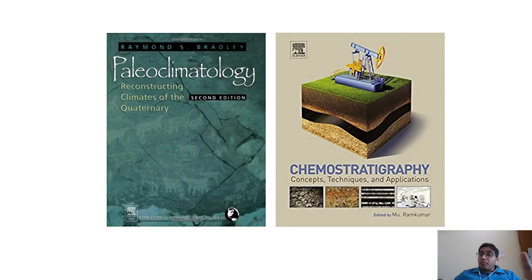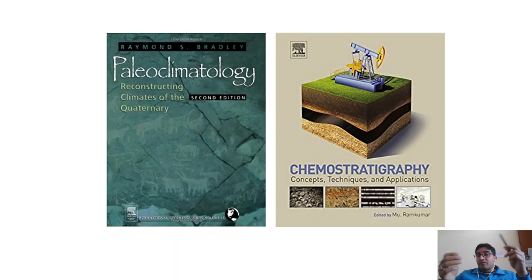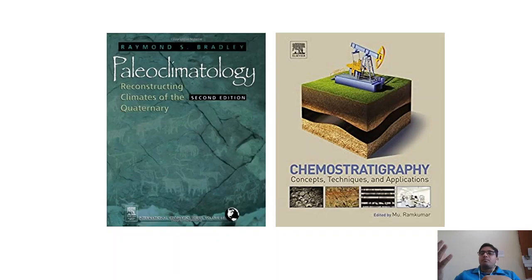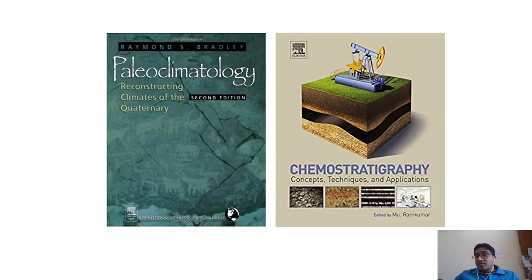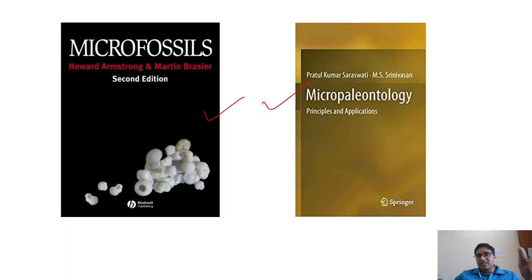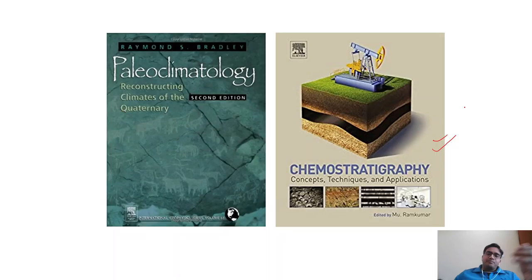For paleoclimatology, Paleoclimatology: Reconstructing Climates of the Quaternary by Raymond Bradley is a must for the Quaternary geology portion. This book discusses dating methods, magnetostratigraphy, biostratigraphy, and how proxies like tree rings, ice cores, and marine fossils are used to reconstruct past climates. For chemostratigraphy — especially oxygen isotopes and elemental analysis — the book Chemostratigraphy is perfect for this examination. The concepts and techniques are written beautifully in that book.